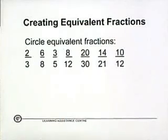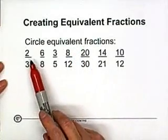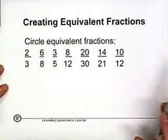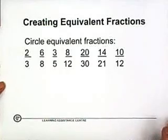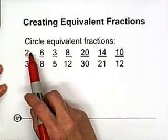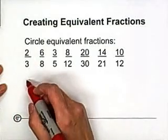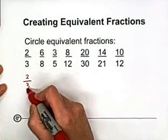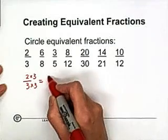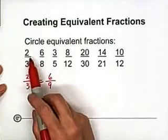Now we have an example: circle the equivalent fractions. We are given seven fractions. Let's see how many equivalent fractions we have — five. Starting with two-thirds, if we multiply by three to the top and bottom we should get six over nine. But this one shows six over eight, so these two are not equivalent. And comparing three over five with two-thirds, we can see it's obviously not equivalent.